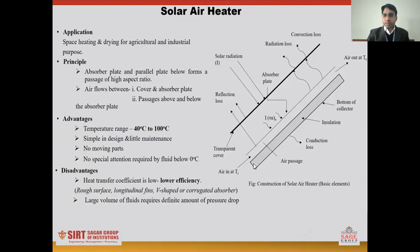The main principle of the solar air heater involves the absorber plate and a parallel plate forming a passage of 5 aspect ratio. The air flows between the transparent cover and the absorber plate.